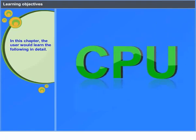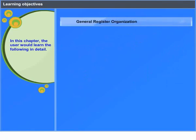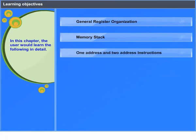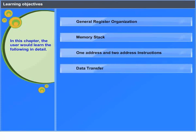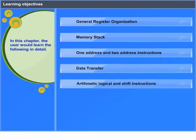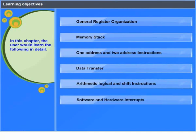Learning Objectives: In this chapter, the user will learn in detail about General Register Organization, Memory Stack, One Address and Two Address Instructions, Data Transfer, Arithmetic Logical and Shift Instructions, and Software and Hardware Interrupts.